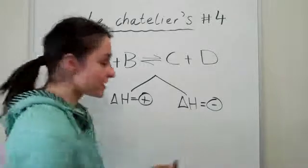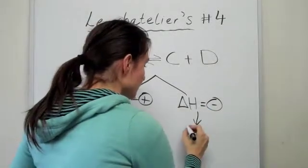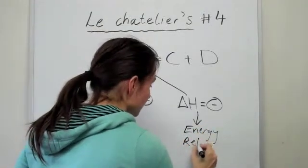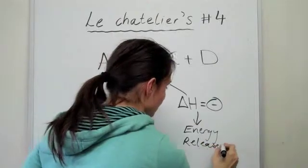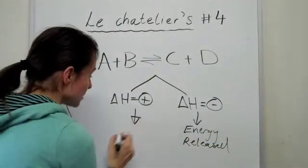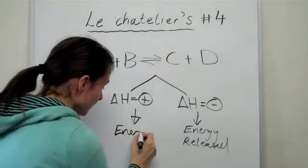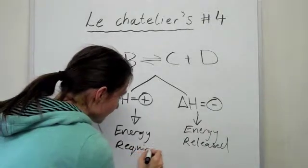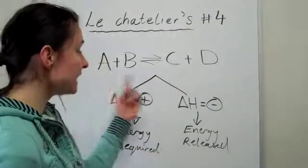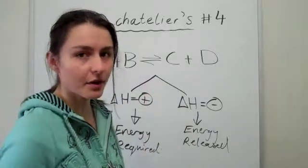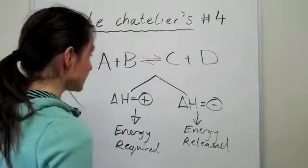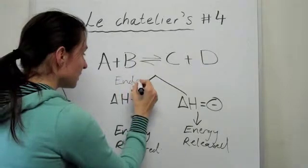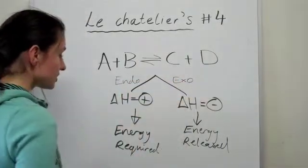When delta H is negative, you've got an exothermic case, so energy is released. When you have a positive delta H, it means that energy is required. And this is going to be very important in Le Chatelier's principle because energy will have just as much importance as any other of those reactants or products. Remember that this is endothermic, and this is exothermic.